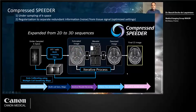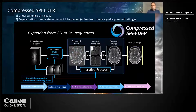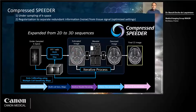The additional technique I use is compressed SPEEDER. It is based on an undersampling of k-space and there is a regularization factor to separate the redundant information — the tissue signal from the noise — and it helps to optimize the settings. It's a trade-off between cleaning the noise from the tissue signal. If the regularization factor is too high, you will miss some clinical information.